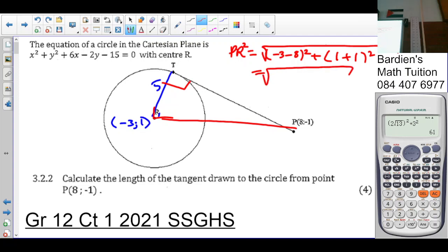So that works out to be the square root of, let's put this in the calculator, the square root of open brackets, negative 3 minus 8 squared. Negative 3 minus 8 squared plus 2 squared. That gives you 5 root 5. So let's go 5 root 5.